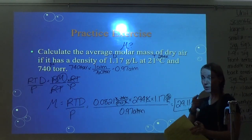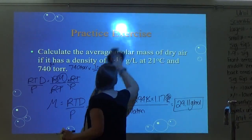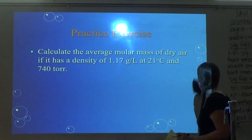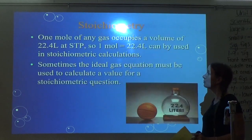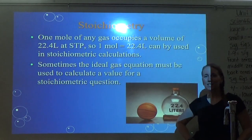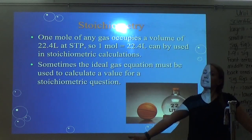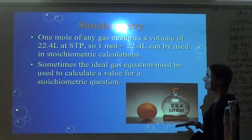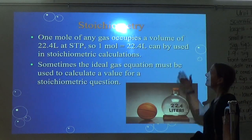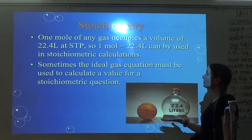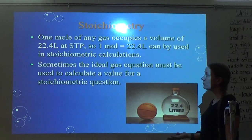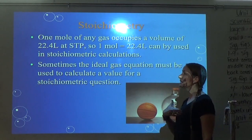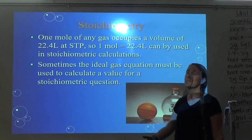Hopefully you got yours right — yours was a lot easier than the previous one. That doesn't mean they all have to be that hard. On the AP exam, you're timed, so they can't give you something super complicated. Now we're going to connect gas laws to stoichiometry. A mole of any gas occupies 22.4 liters at STP, and that can be used in stoichiometric calculations.